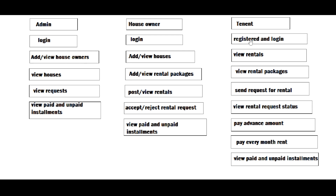After that, the tenant can register with their details like email, name, password, gender, and more, then login into the website with their email and password. The tenant can view the rentals, view the rental packages, select the rental houses, and send a request for rental to the house owner.